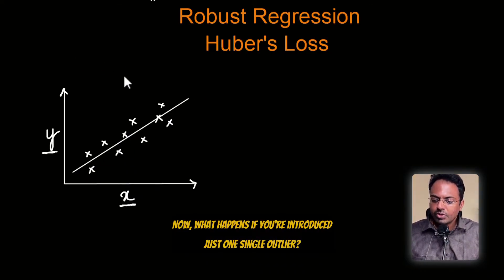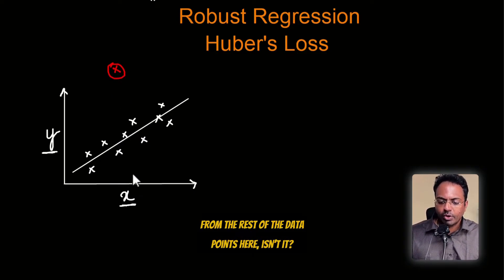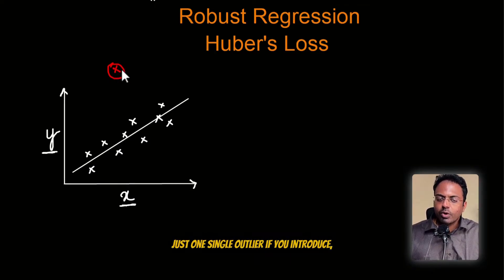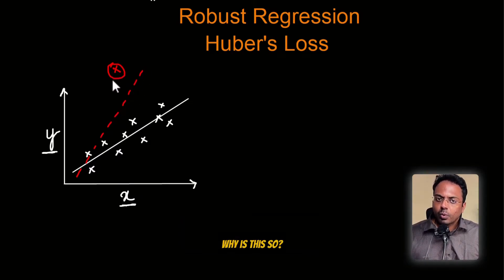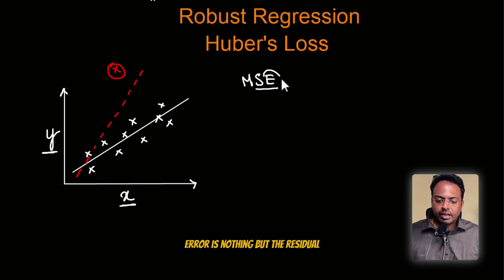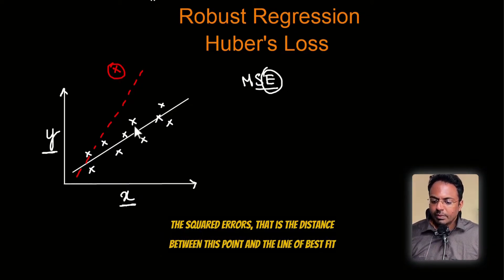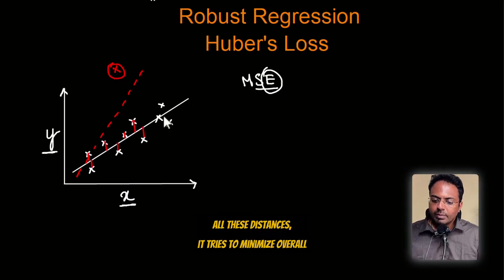Now, what happens if you introduce just one single outlier? This outlier data point is quite different from the rest of the data points. Just one single outlier, and this line will tend to tilt towards that outlier data point. Why? Because in linear regression, we use mean squared error — the residual. It tries to minimize the squared distances between each point and the line of best fit.